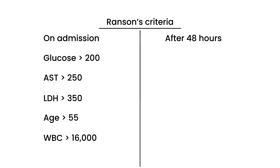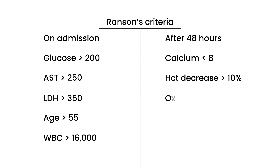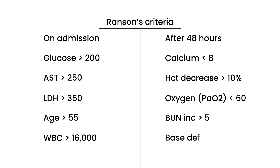After 48 hours, there's another set of findings remembered by the mnemonic Calvin and Hobbes: Calcium less than 8, Hematocrit decrease of greater than 10%, Oxygen (PaO2) less than 60, BUN increase of greater than 5, a Base deficit greater than 4, and fluid Sequestration of greater than 6 liters.